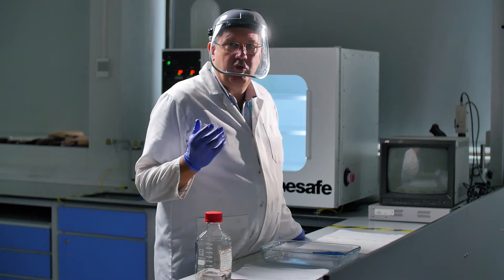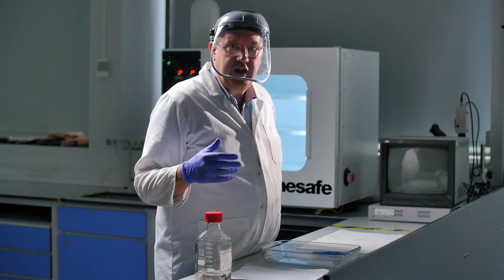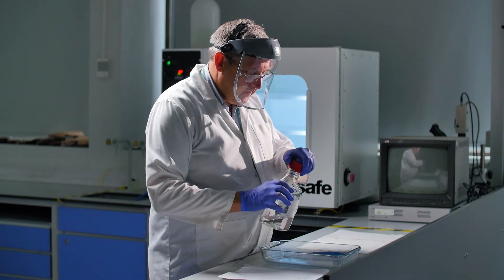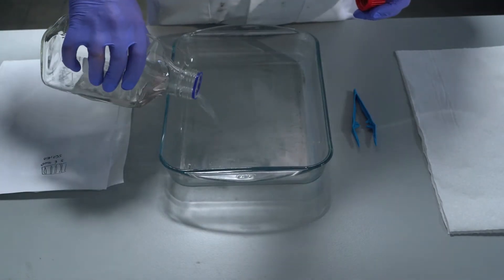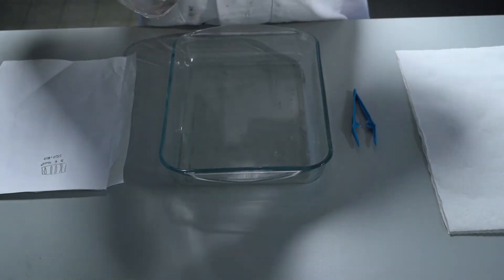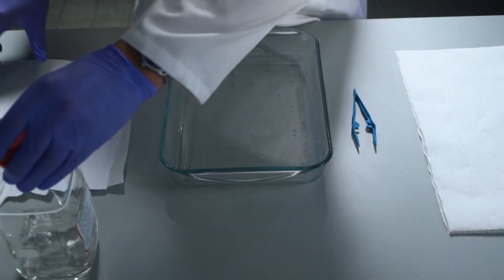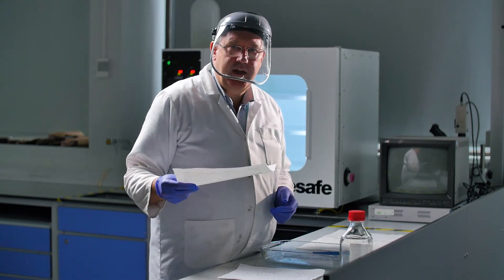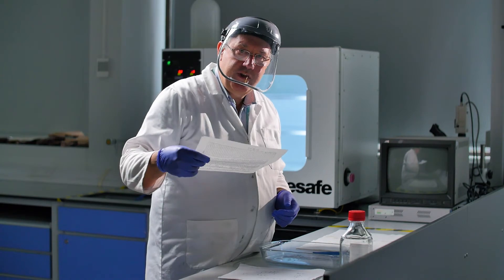So what I need to do is first of all put some of this ninhydrin solution in this processing tray. To treat the samples, I've got two bits of well-handled paper here I'm just going to pass them through this solution.